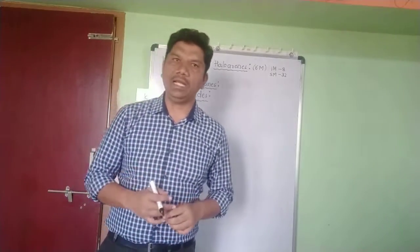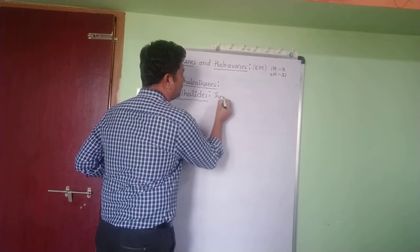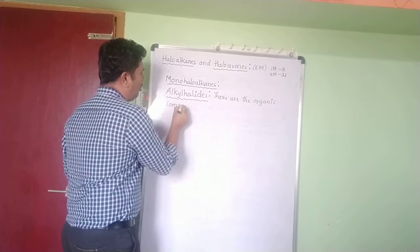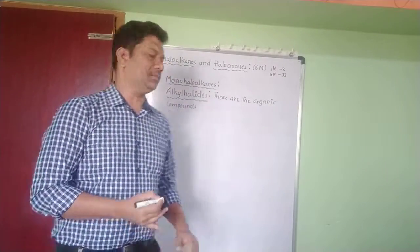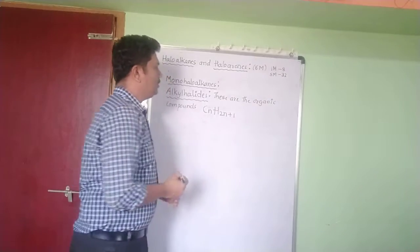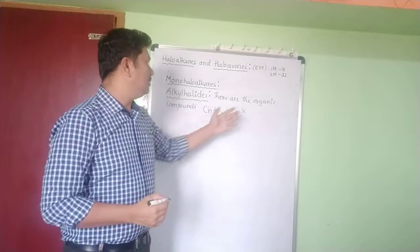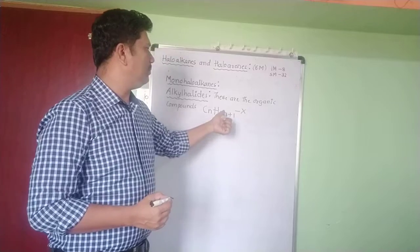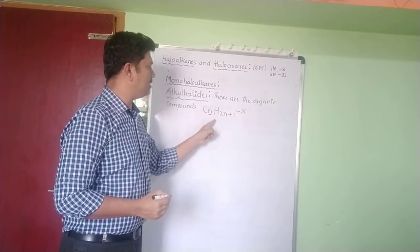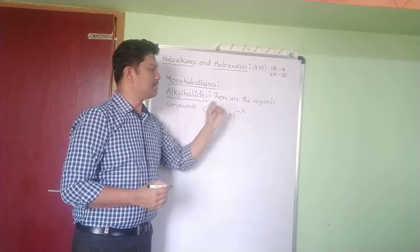If they ask what are alkyl halides, the definition is: alkyl halides are organic compounds having the general formula CₙH₂ₙ₊₁–X, where n is an integer (1, 2, 3, and so on), C is carbon, H is hydrogen, and X stands for a halogen.